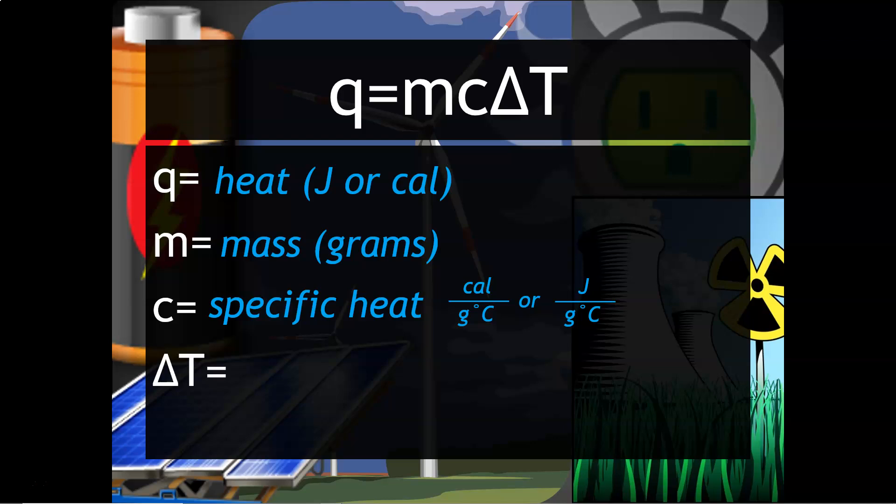And then finally delta T is the change in temperature. That little triangle means change, and to do change you have to do subtraction. It's always T final minus T initial.